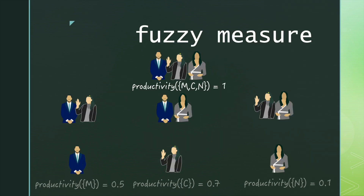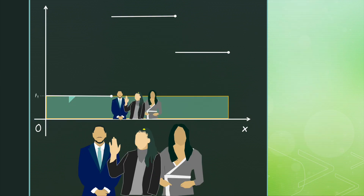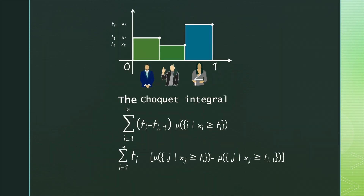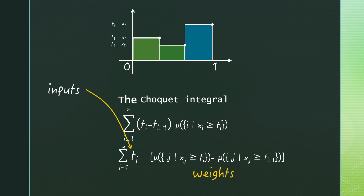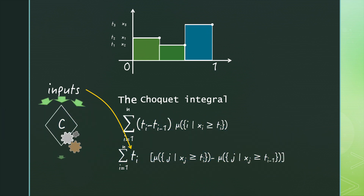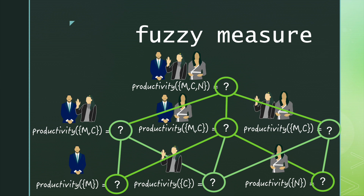The Choquet integral is a function whose behavior is determined by the values of its associated non-additive or fuzzy measure. In our introductory video, we gave an interpretation of the fuzzy measure's values as the relative output of workers when working in different teams. However, we could have any number of situations and interpretations that would be applicable — wherever we have multiple inputs to aggregate into a single output and where those inputs could reasonably have a positive effect. Here we address the problem of determining those fuzzy measure weights from collected data.